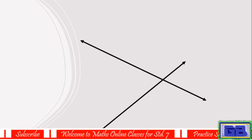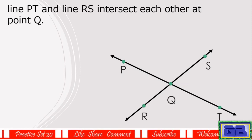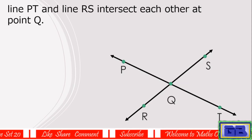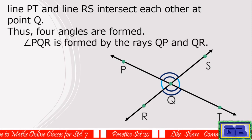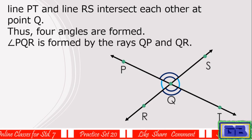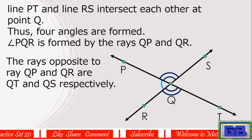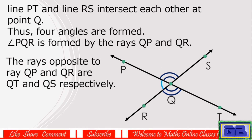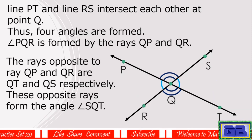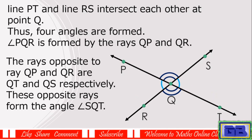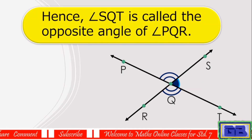Two lines are intersecting. Line PT and line RS intersect each other at point Q. Four angles are formed. Angle PQR is formed by the rays QP and QR. The rays opposite to ray QP and QR are QT and QS respectively.